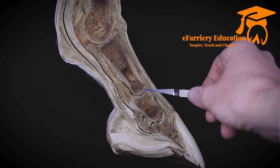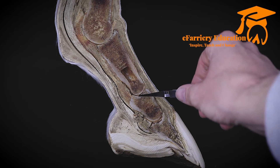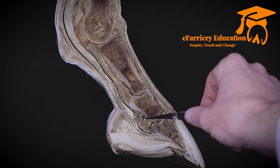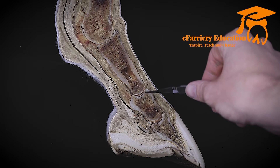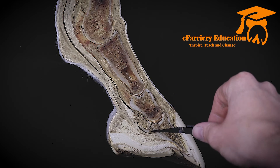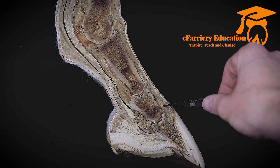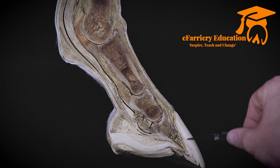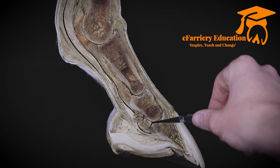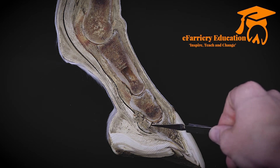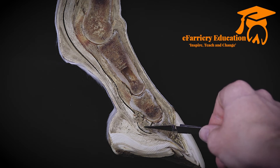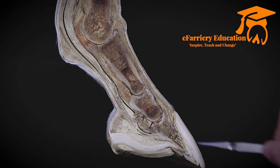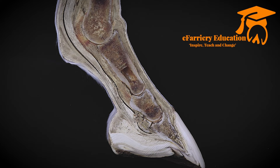As we progress down, you can see the articulation with the middle phalanx. The middle phalanx then articulates with the distal phalanx, also known as our pedal bone or coffin bone. This is actually a complex joint — we'll talk about joints later in the series — but it also articulates with the navicular bone, also known as the distal sesamoid bone, which forms a fulcrum for the passage of the deep digital flexor tendon. That will be covered in the tendon chapter.